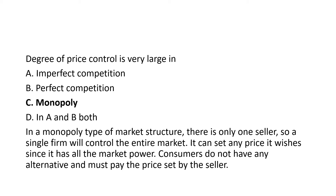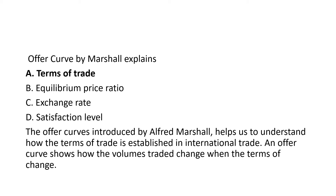Coming to the first question: the degree of price control is very large in which of the following market structures — imperfect competition, perfect competition, monopoly, or both A and B? The correct choice is monopoly. Monopoly is a market structure where there is a single seller, so this person will have the entire market power, and consumers who come to purchase goods do not have any alternative but must pay the price set by the seller.